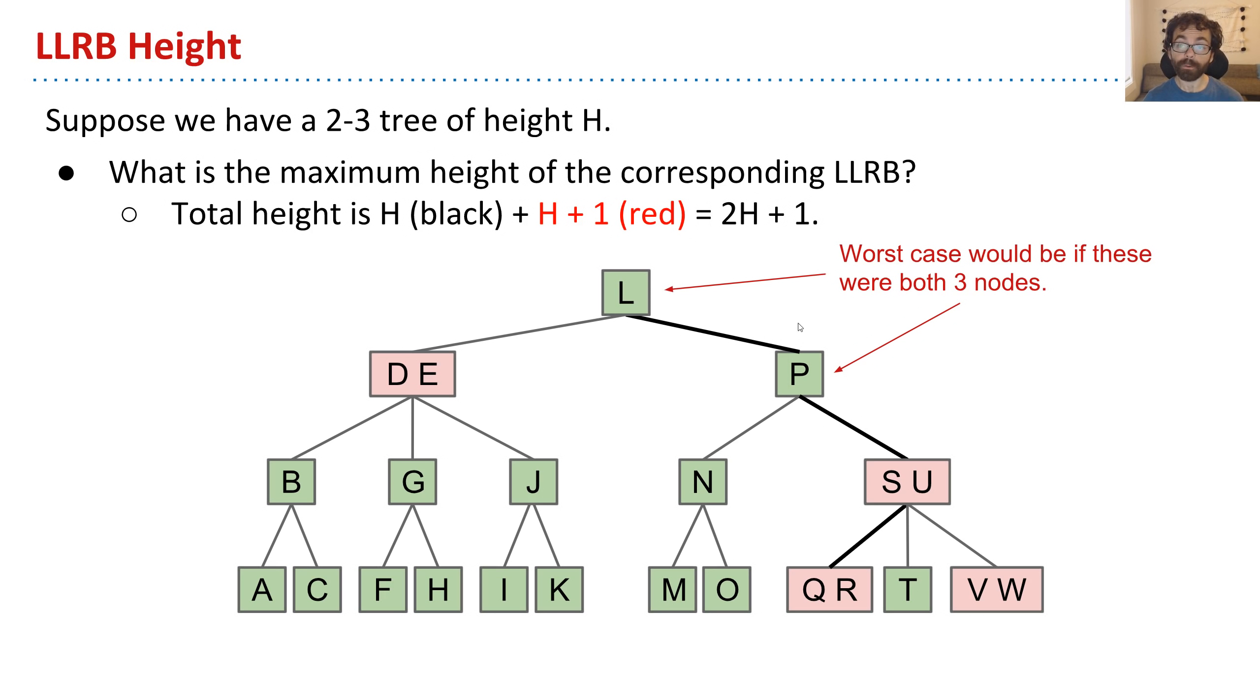So here the max height would be h links, so we have h black links. And in the worst case, every one of these nodes along the critical path would be three nodes. So we'd have a red link inside of this three node, a red link inside of this three node, a red link inside of this three node, and a red link inside of this three node. So the total height would be h black links and h plus 1 red links, where these red links are inside the three nodes. So the overall height would be 2h plus 1.